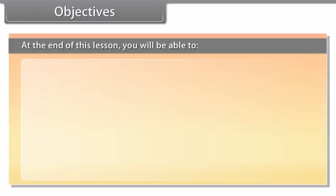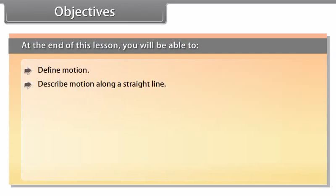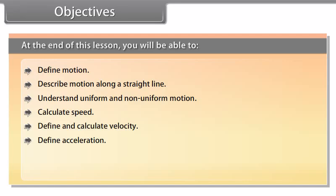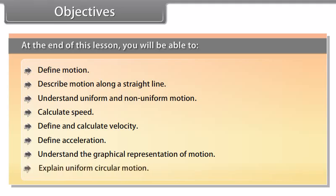Objectives: At the end of this lesson, you will be able to define motion, describe motion along a straight line, understand uniform and non-uniform motion, calculate speed, define and calculate velocity, define acceleration, understand the graphical representation of motion, and explain uniform circular motion.